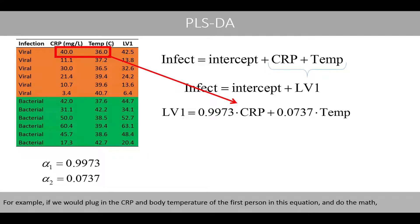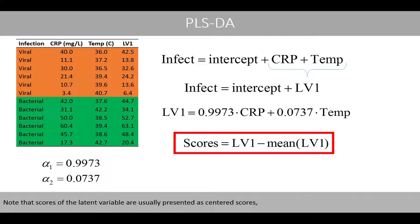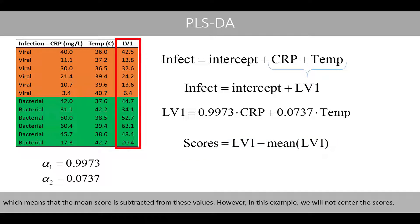For example, if we plug in the CRP and body temperature of the first person into this equation and do the math, we will get a score of 42.5. Note that the scores of the latent variable are usually presented as centered scores, which means that the mean score has been subtracted from these values. However, in this example, we will not center the scores.